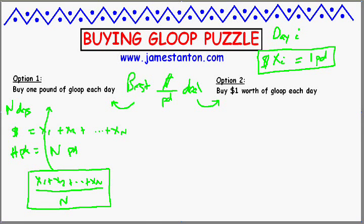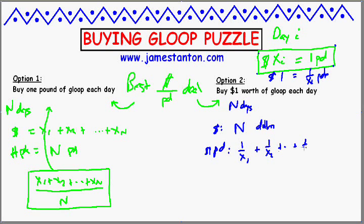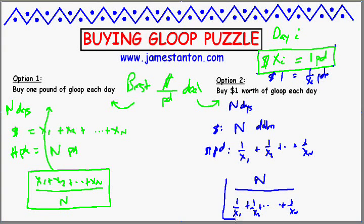Option number two — I'll write this in blue. Let's again imagine N days. How much would I pay? If I'm paying one dollar each day, I'm going to spend N dollars after N days. How many pounds do I get? If I'm spending one dollar per day, dividing the equation by Xi tells me that one dollar gives me 1/Xi pounds. So on day one I get 1/X1 pounds, on day two 1/X2 pounds, up to 1/XN pounds on the last day. My dollar-per-pound ratio is therefore N dollars divided by (1/X1 + 1/X2 + ... + 1/XN). That's my cost-per-pound formula following option two.